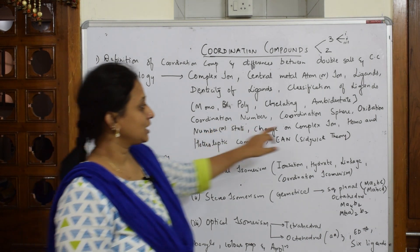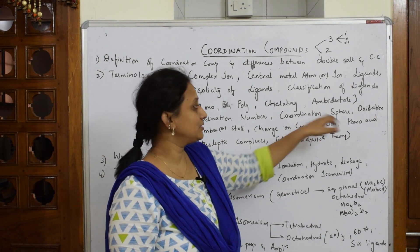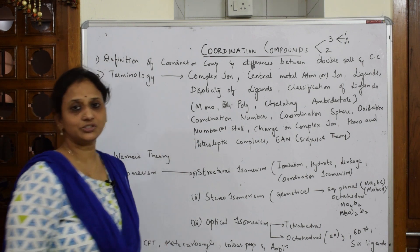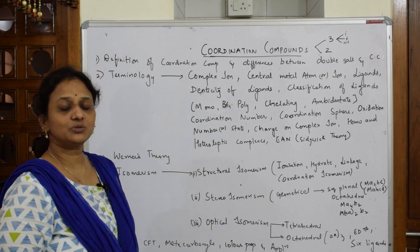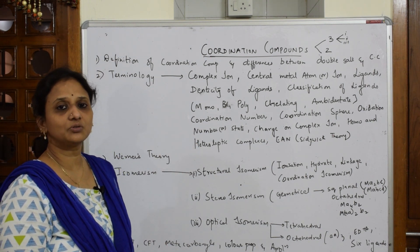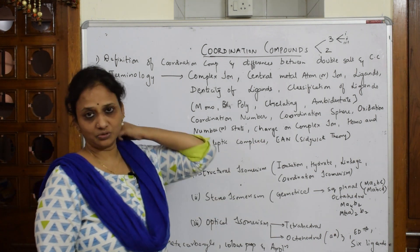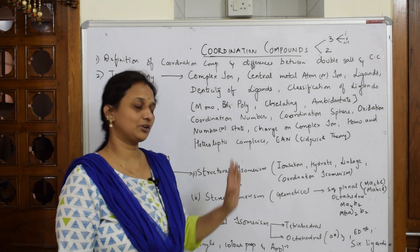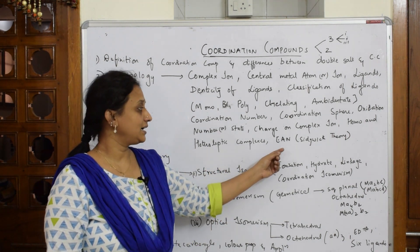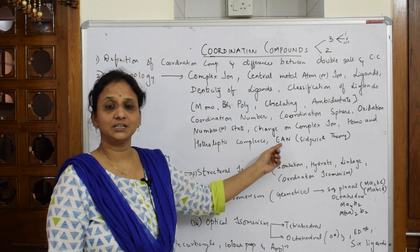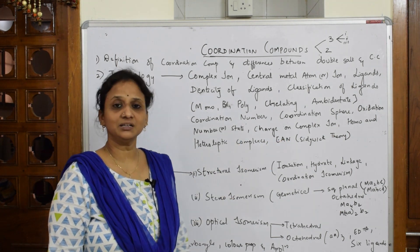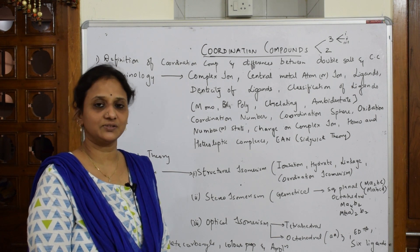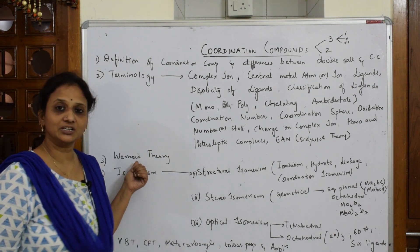I'll be teaching you about mono-, bi-, poly-, and ambidentate chelating ligands. We'll cover how to calculate coordination number, what the coordination sphere is, and how to calculate the oxidation state — which is compulsory because without it you cannot determine hybridization. I'll also show how to calculate the charge on the complex ion, and cover homoleptic and heteroleptic complexes.